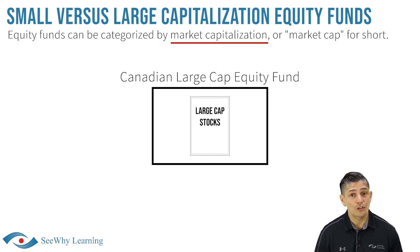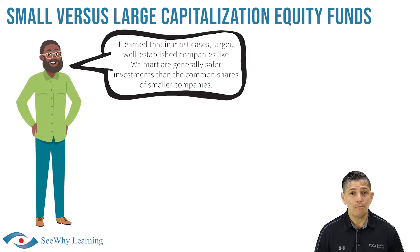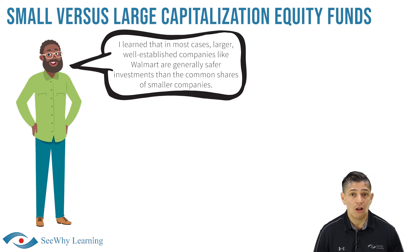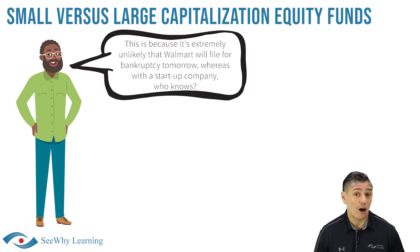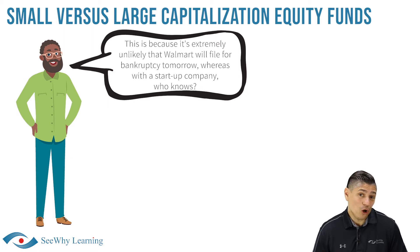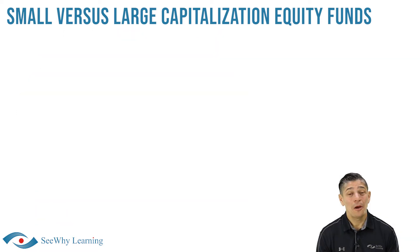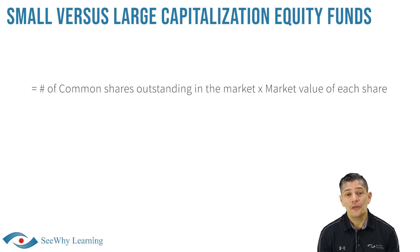So what does market capitalization refer to? In most cases, larger well-established companies like Walmart are generally safer investments than common shares of smaller startup companies. This is because it's extremely unlikely that Walmart will fall into bankruptcy tomorrow, whereas with a startup company, who knows.